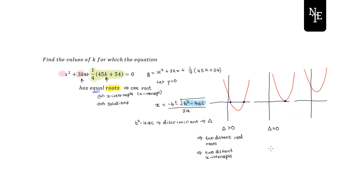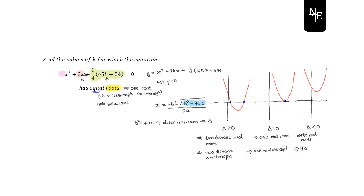The second case corresponds to the discriminant being equal to zero — we say the quadratic has equal roots, or one real root, which graphically means one x-intercept. The third case is when the discriminant is less than zero — the discriminant is negative — and we say there are no real roots, corresponding to no x-intercepts on the graph.